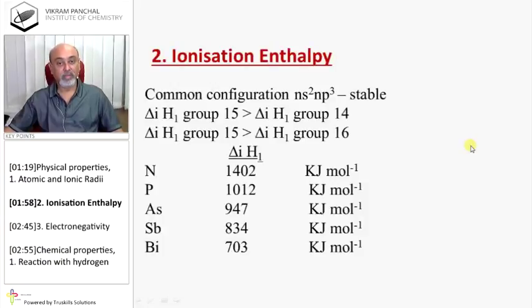Ionization Enthalpy: Common configuration is NS2 NP3, and according to Hund's rule, half-filled subshell arrangement is very stable configuration. Therefore, fifteenth group elements have higher ionization enthalpy. So group 15 ionization enthalpy is greater than 14 as well as greater than 16. Nitrogen to bismuth, as atomic radius increased, attraction between nucleus and outermost shell decreases, therefore ionization enthalpy decreases.